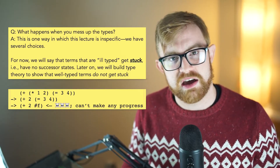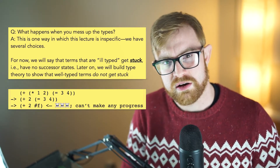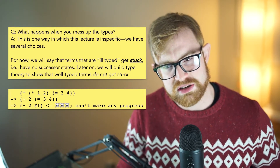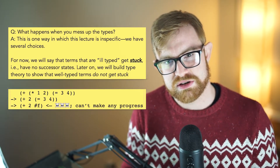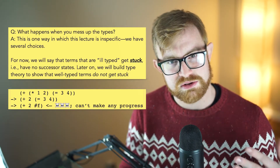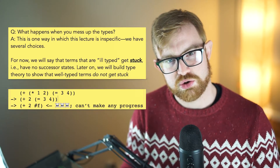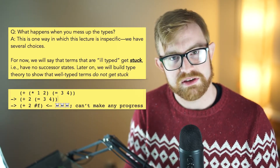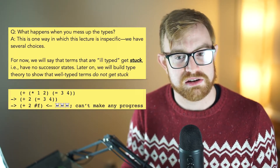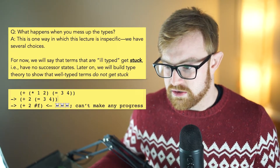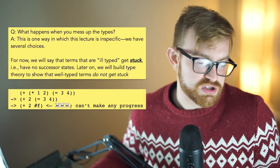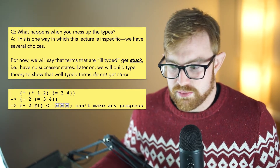Later on, we're going to formally define what it means for expressions to get stuck, meaning they have no successor state that would result in a value. That's going to be the basis for understanding how type theory can actually help us structure a program so that we don't have these kinds of errors. But for now, we're just going to say that there isn't a next state. So for example, if you step to 2 plus false, this just won't have a next state and you can't make any progress from it.